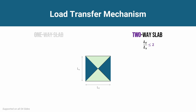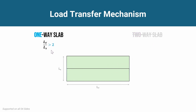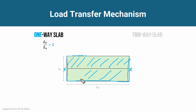If Ly is increased while keeping Lx constant such that Ly/Lx is still less than or equal to two, the load transfer is similar — shorter beams take a triangular load and longer beams take a trapezoidal load. If Ly/Lx becomes greater than two, the load transfer simplifies: only the longer-span beams take the load as a rectangular load, while the shorter-span beams (Lx direction) take no load at all.